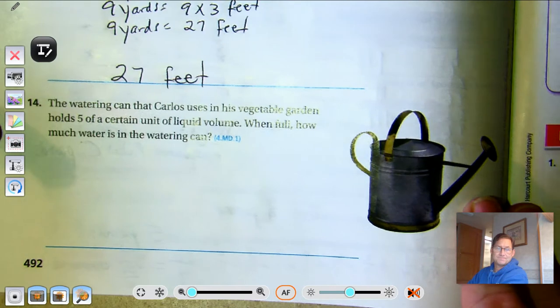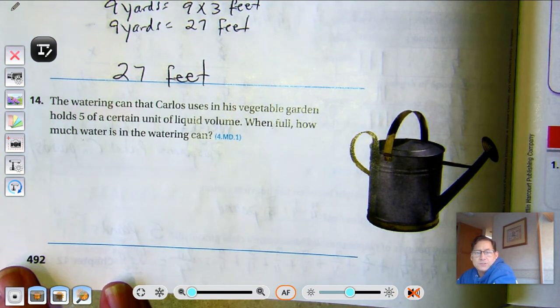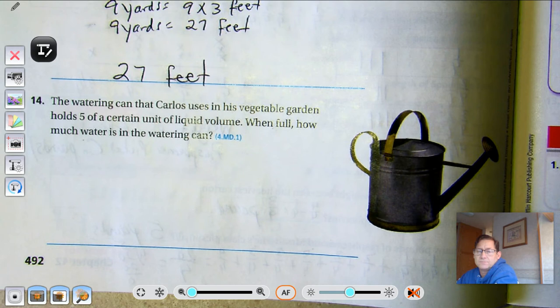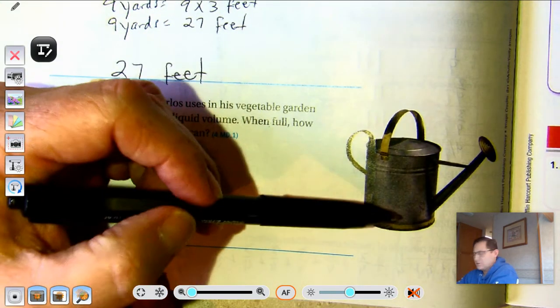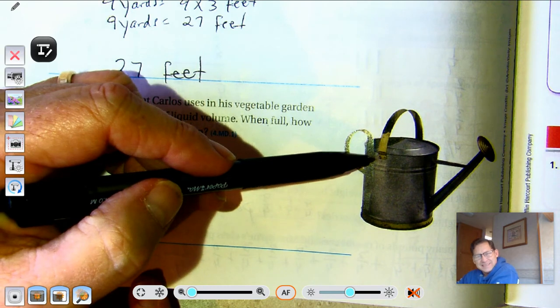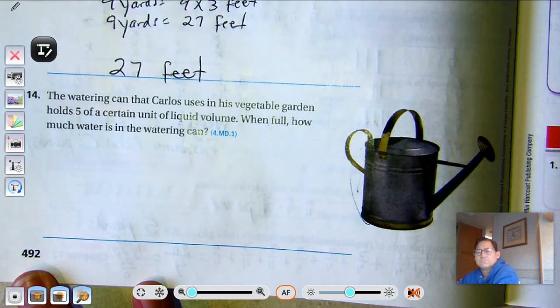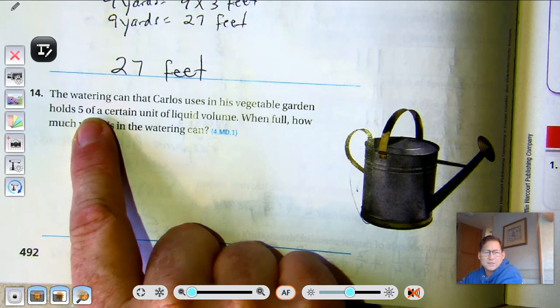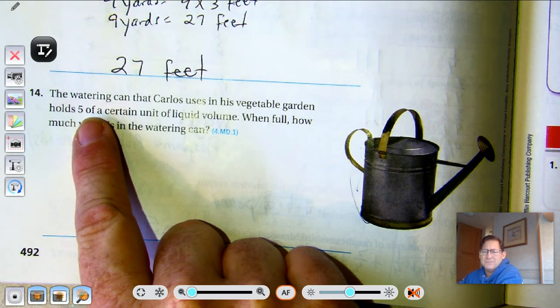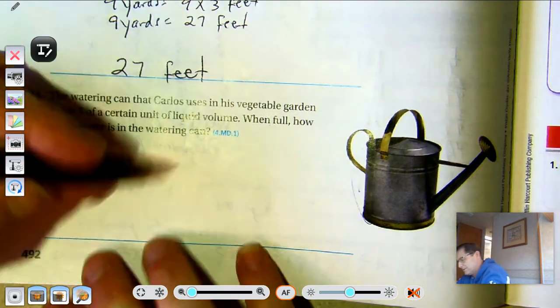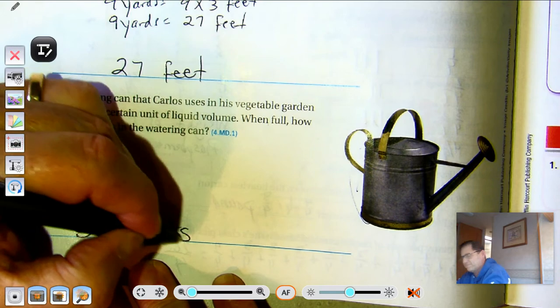And number 14. The watering can that Carlos uses in his vegetable garden holds 5 of a certain unit of liquid volume. When full, how much water is in the watering can? Well, this looks about the size of, it's a little bigger but about the size of a gallon carton of milk. There's 4 quarts in a gallon, so that must be 5 quarts.